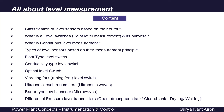We will also cover the different types of level sensors based on their measurement principle: float type level switch, conductivity type level switch, optical level switch, vibrating fork (also called tuning fork) level switch, ultrasonic level transmitters, radar type level transmitters, and DP type level transmitters in different cases like open atmospheric tank, closed tank with dry leg or wet leg.